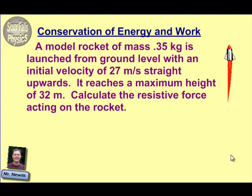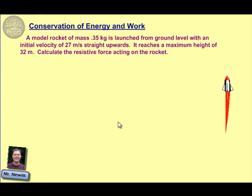It reaches a maximum height of 32 meters. Calculate the resistive force that's acting on the rocket to essentially slow it down as it moves upward. So as we mentioned, this is going to be a conservation of energy situation, but now involving some work. And the resistive force that we're seeking here is the force that is basically going to be the result of that work.